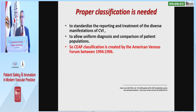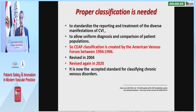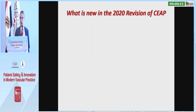The CEAP — Clinical, Etiological, Anatomical, and Pathological — classification was created by the American Venous Forum in 1996, revised in 2004, and revised again in 2020, and is now the accepted standard for classifying CVI.